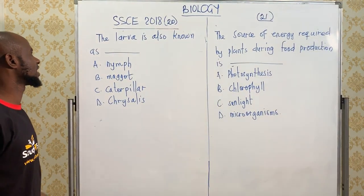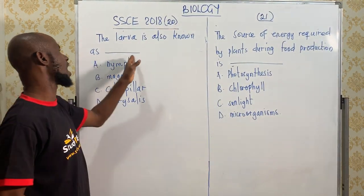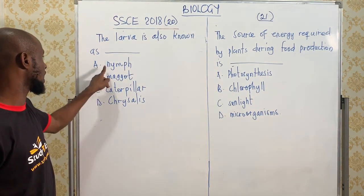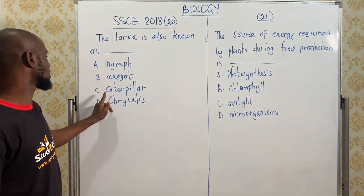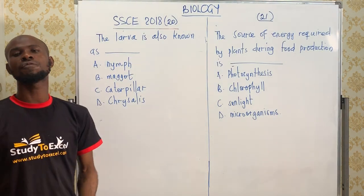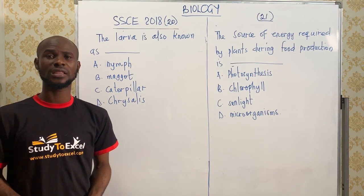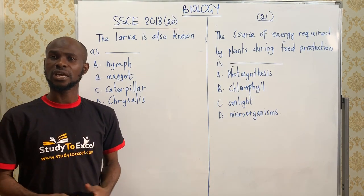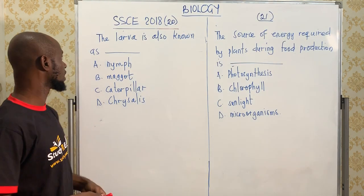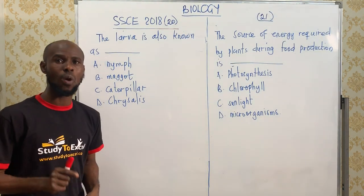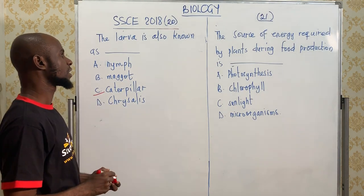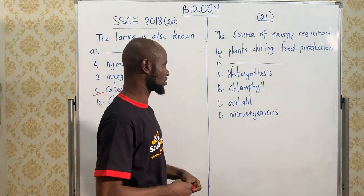Number 20: The larva stage of that question is also known as — A, Nymph; B, Maggot; C, Caterpillar; D, Chrysalis. So what's the formula I gave you? Butterfly can cry. The larva stage is caterpillar — that's what I told you. The larva stage is caterpillar, while the pupa stage is chrysalis. So the answer is caterpillar.